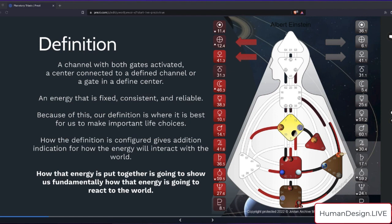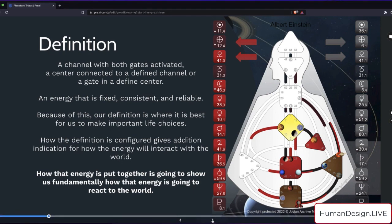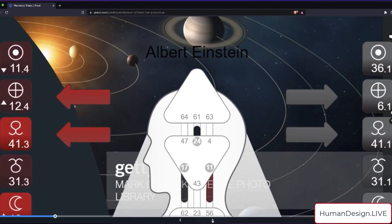And how our definition is configured gives additional indication for how the energy will interact with the world. So the qualities of the planets show us how we are designed to interact with the world, and how that energy is put together is going to show us fundamentally how the energy is going to react to the world as well. Is it going to be Mars-like? Is it going to be Venus-like? Is it going to be Jupiterian?